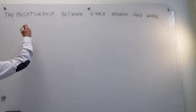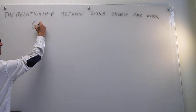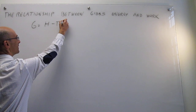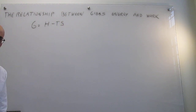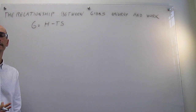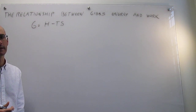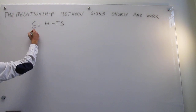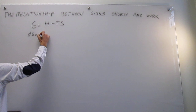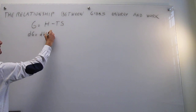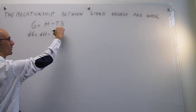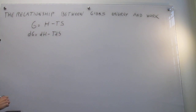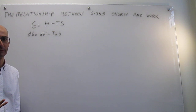Let's start with the definition of the Gibbs energy, which is the enthalpy minus the product of the temperature times the entropy. We're going to take an infinitesimal change in a process that will be isothermal, so the temperature is constant. For an infinitesimal change, this expression turns into: differential of G is equal to differential of enthalpy minus T differential of S, where we have assumed that the process is isothermal.